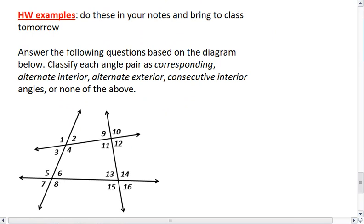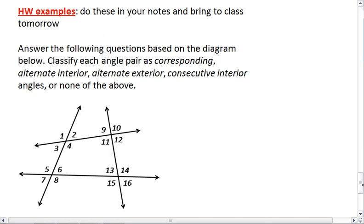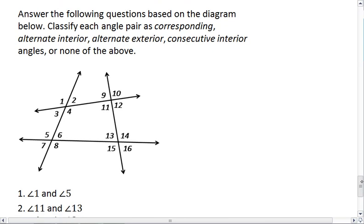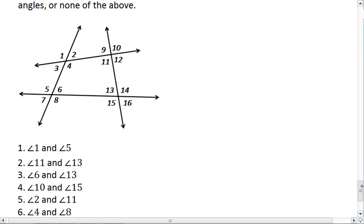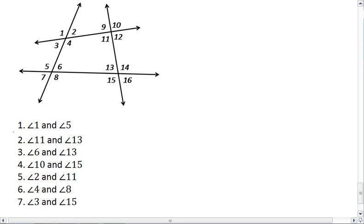This brings us to your homework example. Answer the following questions based on the diagram below. I want you to classify each angle pair that you are given as corresponding, alternate interior, alternate exterior, consecutive interior, or none of the above. Here's your diagram, and here are the seven pairs of angles that you need to classify. Do these in your notes, review the videos if you need to, and we'll talk about it first thing in class tomorrow.